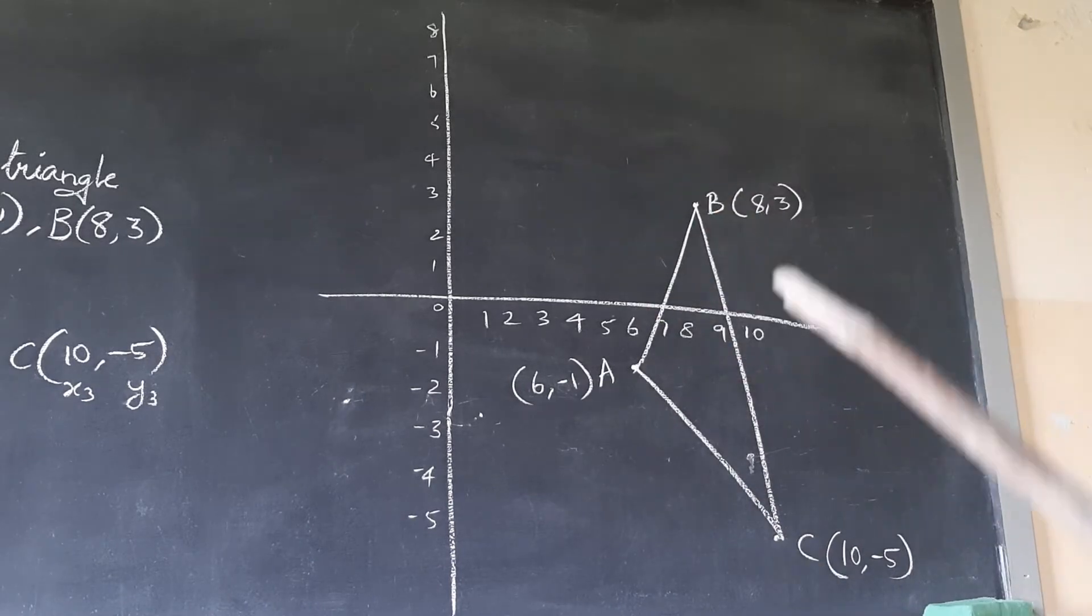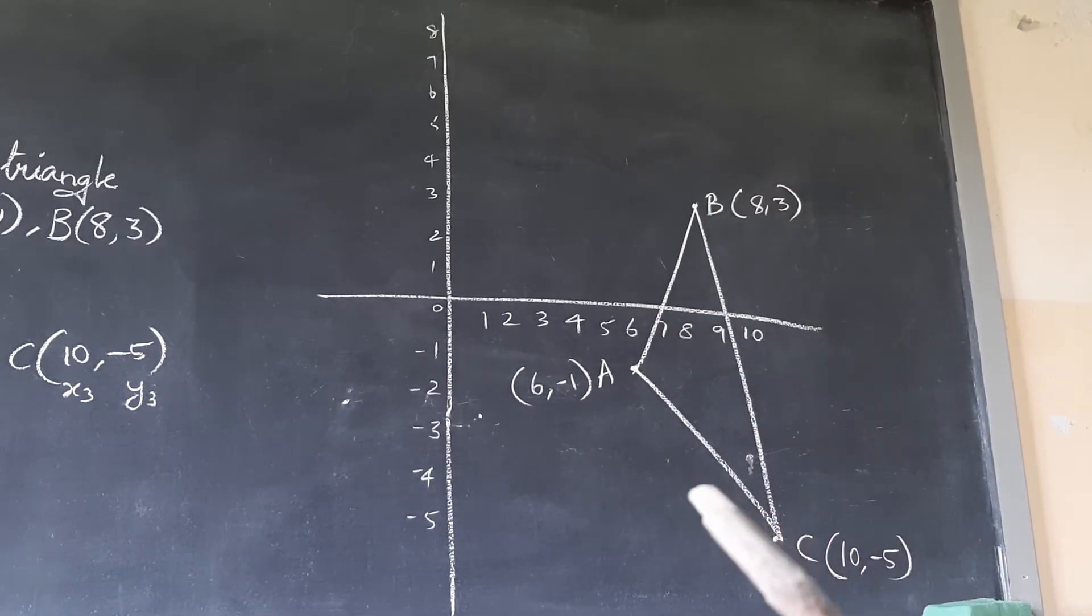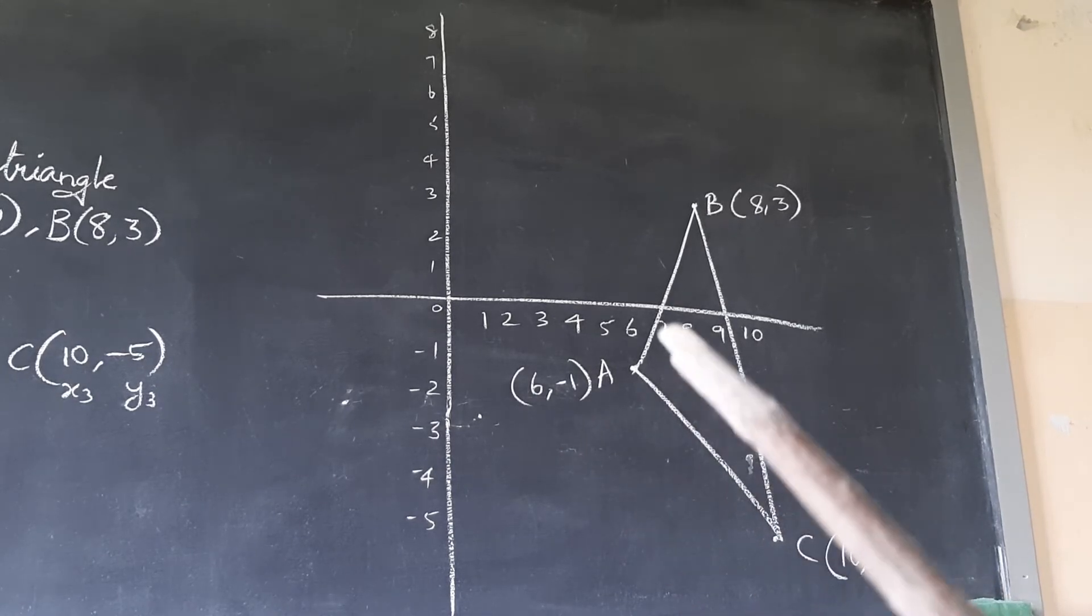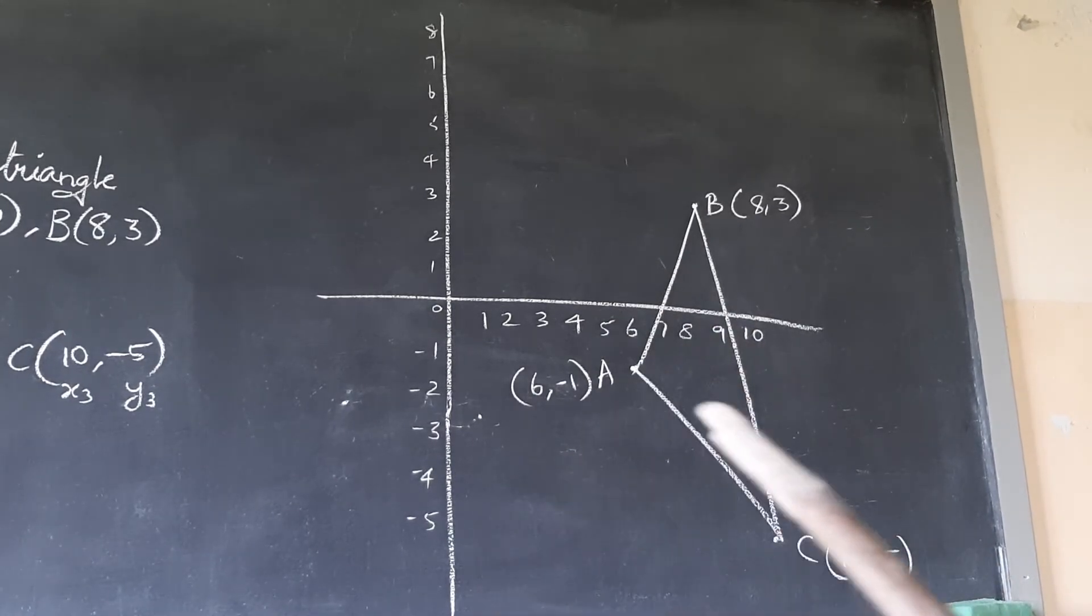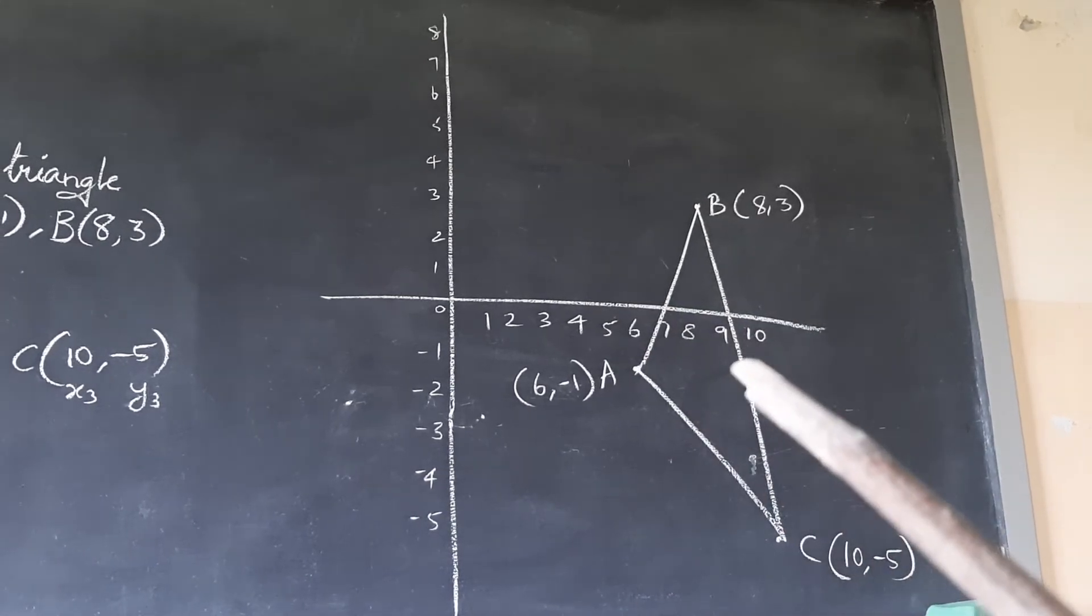The graphical method: A, B, C points - we draw and find the line. A point, B point, C point. So here is the center point.